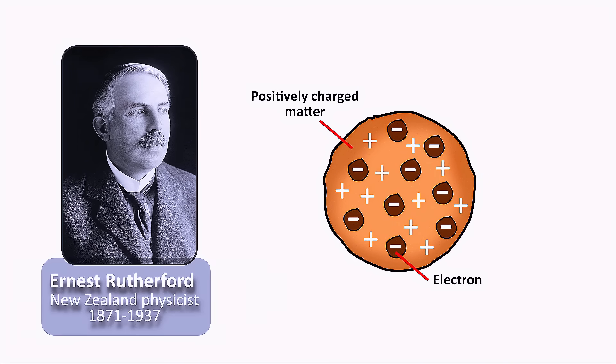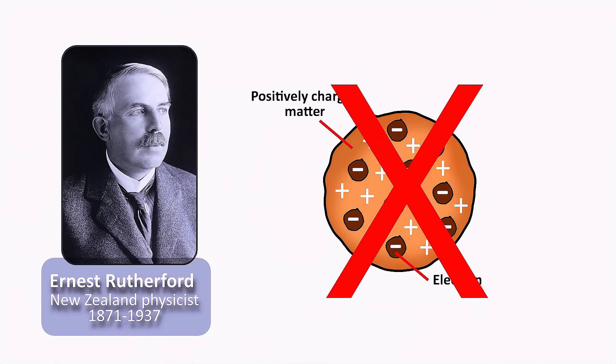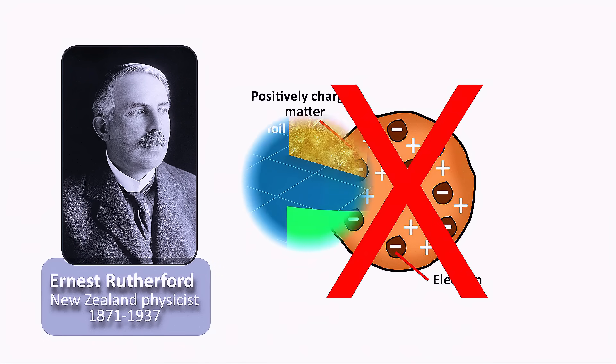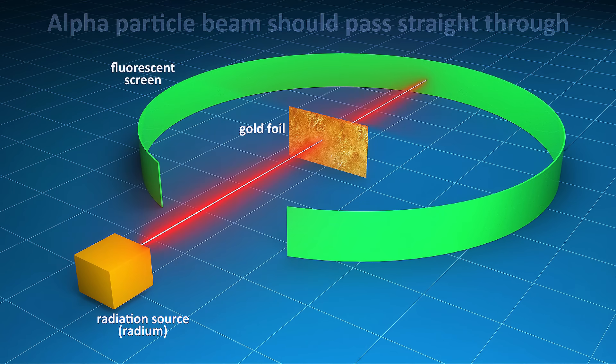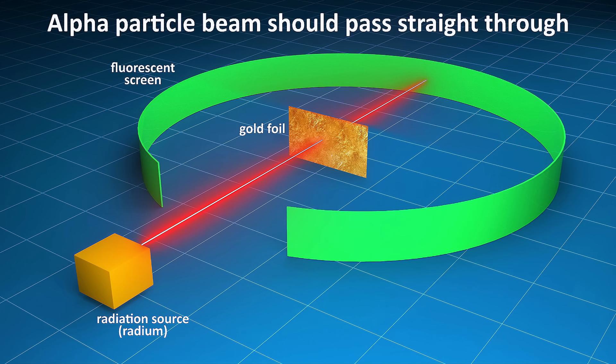Ernest Rutherford, Thompson's own student, performed an experiment intending to verify this plum pudding idea, but it ended up shattering it instead. The premise was simple. If atoms are overall neutral with evenly distributed charges, a beam of positively charged particles pointed at a thin sheet of metal should pass straight through.